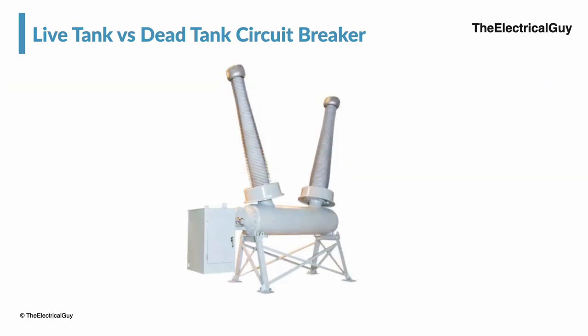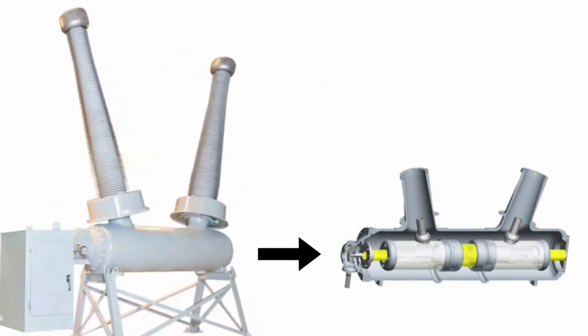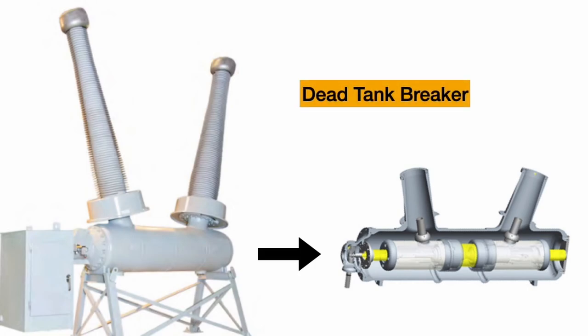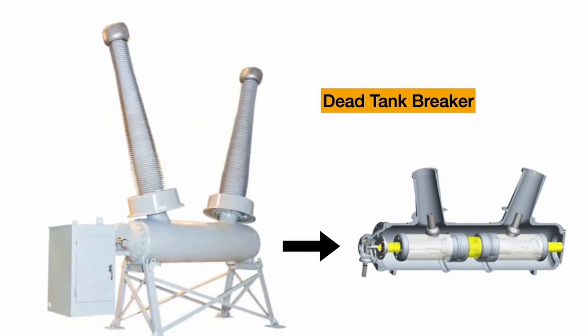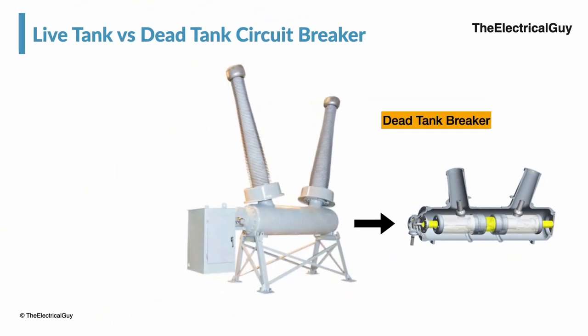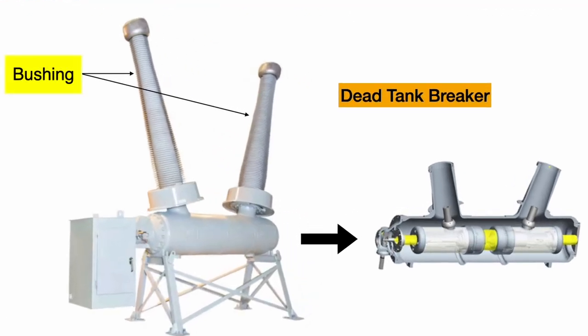Now focus on the circuit breaker shown — again, a single phase out of 3 phases. Here the interrupter is not in the top section. The interrupter of this circuit breaker is placed inside the bottom metal housing, which is completely grounded — it is at a dead potential. Hence such circuit breakers are called dead tank type circuit breakers. The tank is completely filled with a dielectric medium like SF6 gas, which insulates the live contacts from the metal tank. To connect the incoming and outgoing supply, outdoor bushings are used.